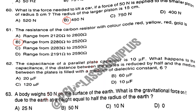Question number 63. A body weighs 50 N on the surface of the earth. What is the gravitational force on it due to the earth at a height equal to half the radius of the earth? The answer is Option D. Wait — the answer given here requires rechecking, but the stated answer is Option D.